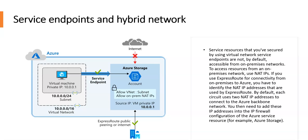To access resources from an on-premises network, we use NAT IPs. If you use ExpressRoute for connectivity from on-premises to Azure, you have to identify the NAT IP addresses used by ExpressRoute, which can also be obtained from your partner edge service providers. By default, each circuit uses two NAT IP addresses to connect to the Azure backbone network. You then need to add these IP addresses into the IP firewall configuration of the Azure service resource — for example, into the IP firewall configuration of Azure Storage.